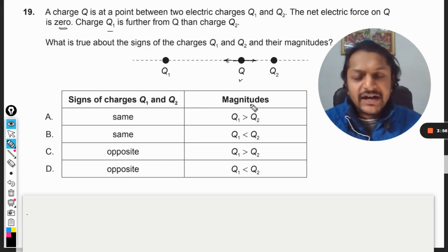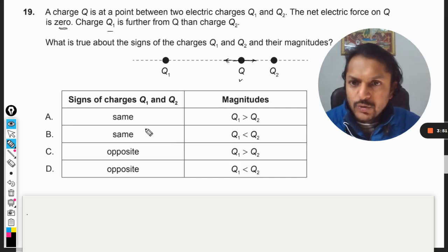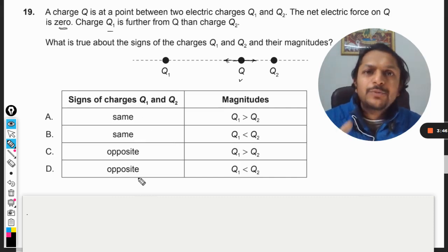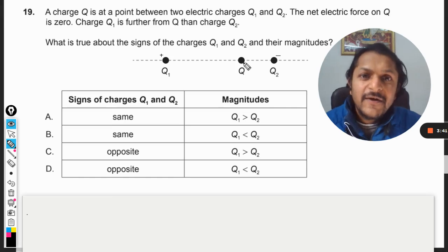What are our options? Signs of the charges q1 and q2: A - same, B - same, C - opposite, D - opposite. First of all, they cannot be opposite. Let us say this is positive and this is negative. This will have repulsion here, and this negative charge will be attracting this charge towards itself. How can these two forces cancel each other?